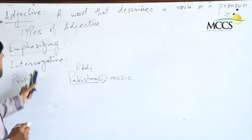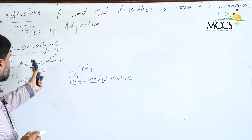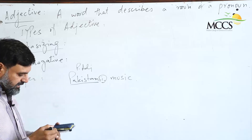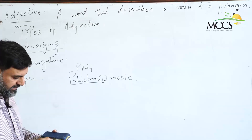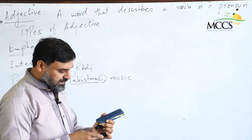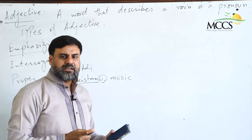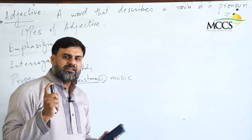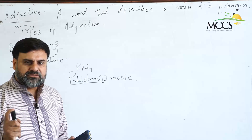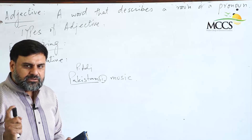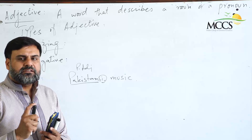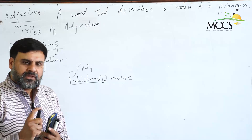So dear students, now we are concluding our discussion on types of adjectives. We have seen what an adjective is, what its usages are, and what its types are. Simply remember that adjectives are the only parts of speech which are used to describe nouns and pronouns. Thank you very much.